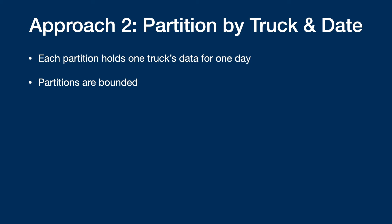You also have a predictable partition size. You know beforehand how many times your GPS machine is going to fire off on a given day, so for every truck you can estimate how many rows of data you will have in a given partition. That is very important in Cassandra, because you don't want to design it in such a way that your partitions grow out of control.